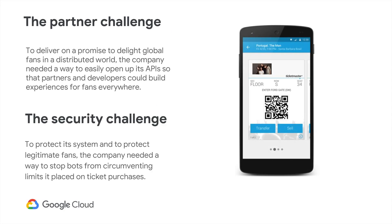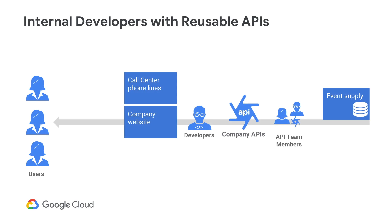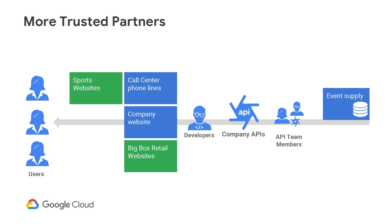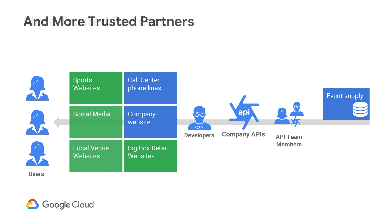The top two problems the company faced were how to secure the connection and the data for the application, and how to prevent bots from simulating online purchasers holding tickets and thus driving up the cost due to artificial demand. In solving these problems, the company found that the security policies could be reused by both internal and partner developers. They were able to create API products reusing the same security policies for partners such as Costco, who included the ability to search for events and purchase tickets on their website. The company found that they could create API products for each trusted partner while reusing the same security policies, and demand amongst partners grew.